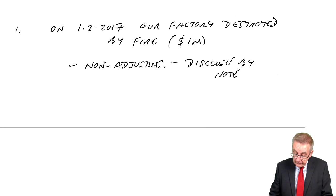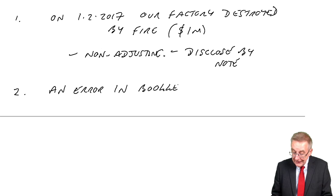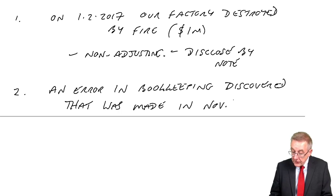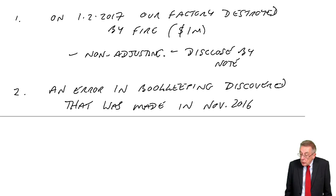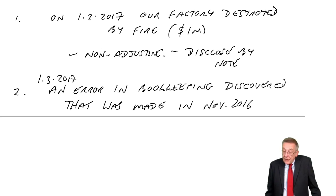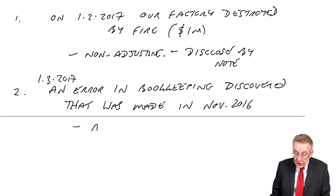Next example: an error in the bookkeeping was discovered on 1st of March 2017 — a mistake that was made in November 2016. Would you change the accounts? Of course you would. We didn't discover it until March 2017, but were things correct at the end of December? No, they weren't, because there was a mistake in November. It's an adjusting event.